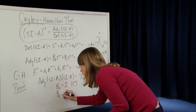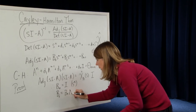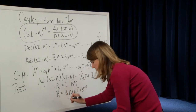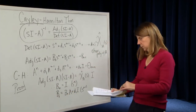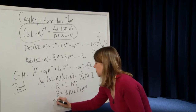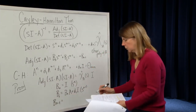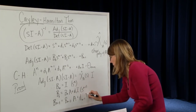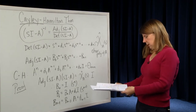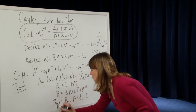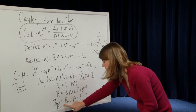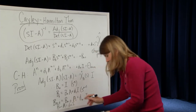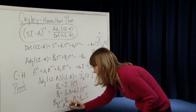Continuing to equate like powers of S: B1 equals B0 A plus D1 I — that's equating the coefficients of S to the N minus 1. Going further down, B N minus 1 equals B N minus 2 times A plus D N minus 1 times I. And finally, the last term in equating like powers gives B N minus 1 times A plus D N times I equals zero.